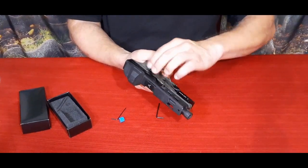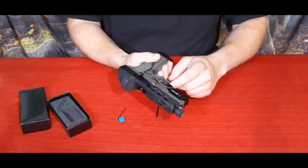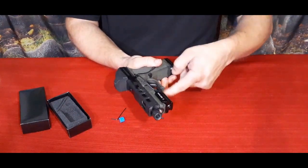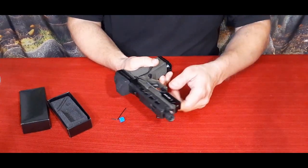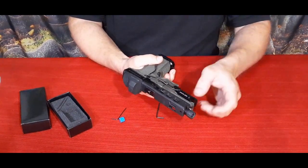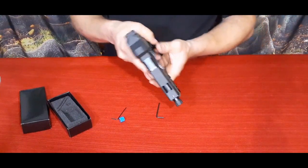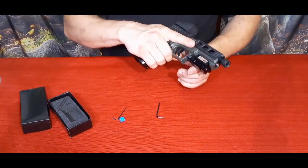The only thing is you got to watch because you don't want to catch it in the action. So I'm not sure which is going to be the best way, maybe routing it around and under the trigger guard there. You're going to have to find a way to attach it. My guess is probably going to have to use some kind of tape.